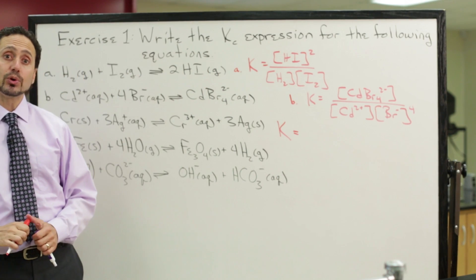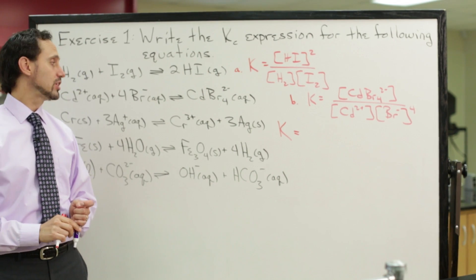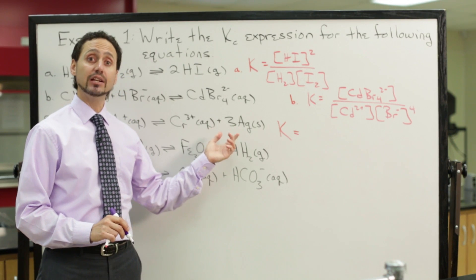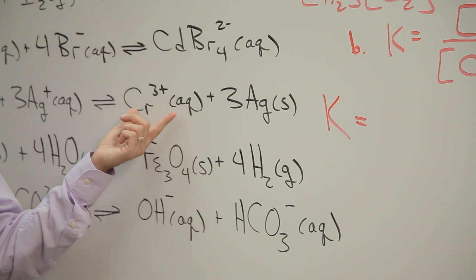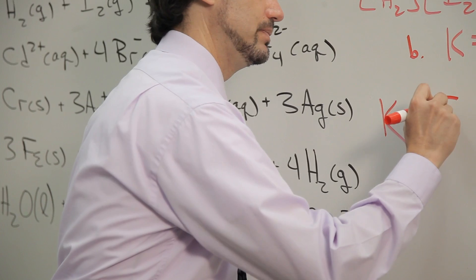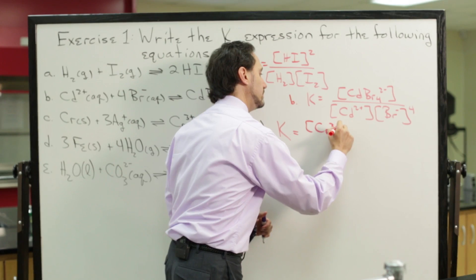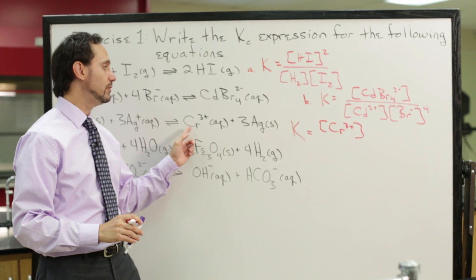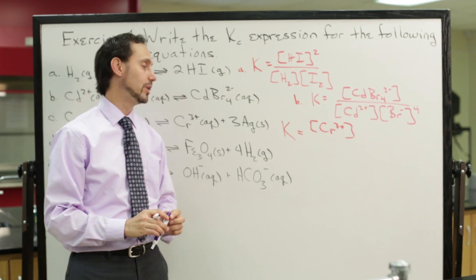Again, we start with the products, but if we look at the products, the first thing you have to remember is to look at the physical state of each of the products. Chromium three plus ions, aqueous, that's okay to include. And there's no coefficient, so that's a coefficient of one, so we leave it at one.